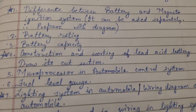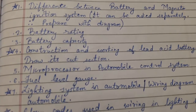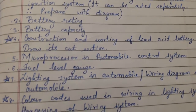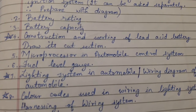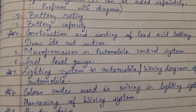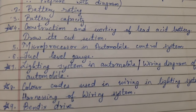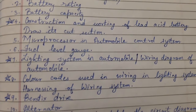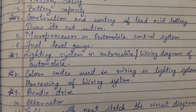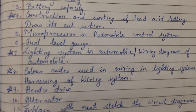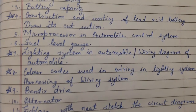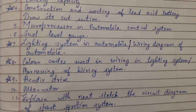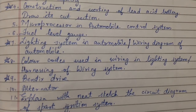Also prepare battery rating, battery capacity, construction and working of lead acid battery, and its cut section diagram. Additionally, cover microprocessor in automobile control systems, fuel level gauge, lighting system in automobiles, wiring diagrams, and color codes used in wiring.